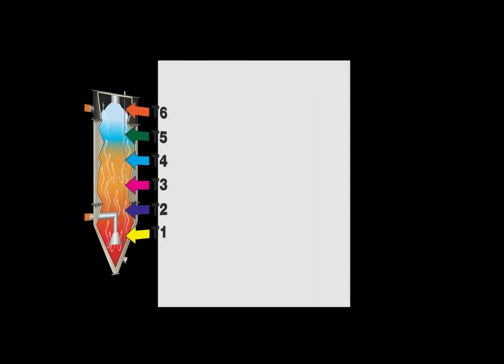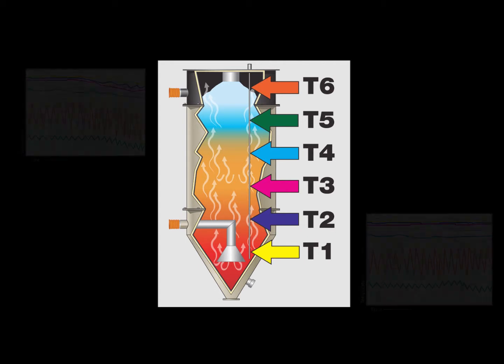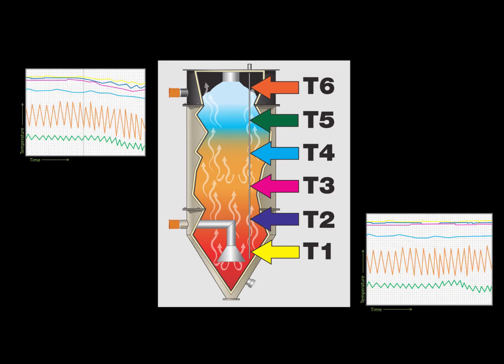As an overview, here is a listing of the temperature probes in your drying hopper and their approximate locations. T1 is located on the bottom near the hot air inlet and T6 is near the top of the hopper. We'll use these references and colors throughout this presentation.